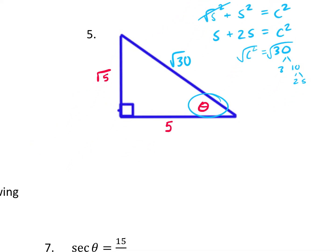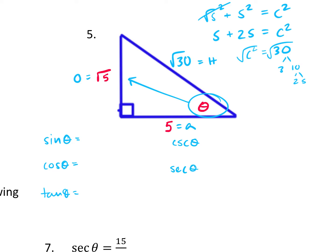It helps to label your opposite, adjacent, and hypotenuse. We just found our hypotenuse — that would be H. √5 is opposite, and 5 would be adjacent. To find my six trig functions, I have sine, cosine, tangent, cosecant, secant, and cotangent. It helps to know SOHCAHTOA.